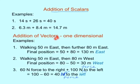Now, addition of vectors this time. First one. Walking 50 meters east and then walking a further 80 meters east. The final position is 130 meters east.